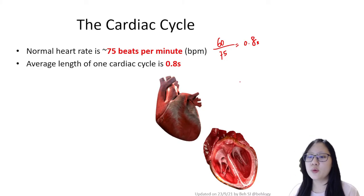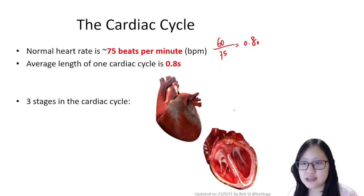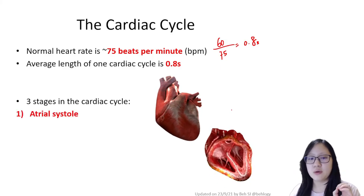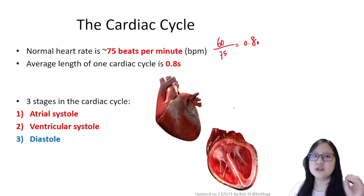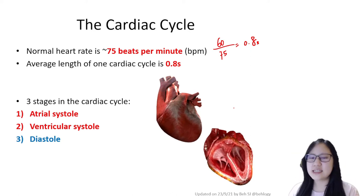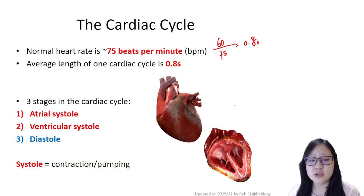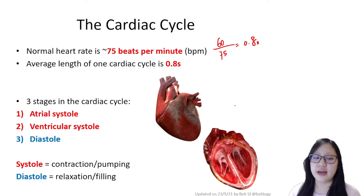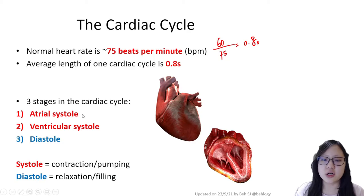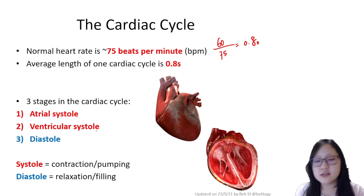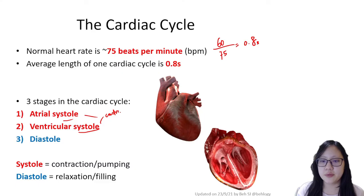In that 0.8 seconds, the heart goes through three different phases. Number one is atrial systole, number two is ventricular systole, and number three is diastole. Systole means contraction or pumping; diastole means relaxation or filling. So atrial systole means the atria contracts, and ventricular systole means the ventricles contract.